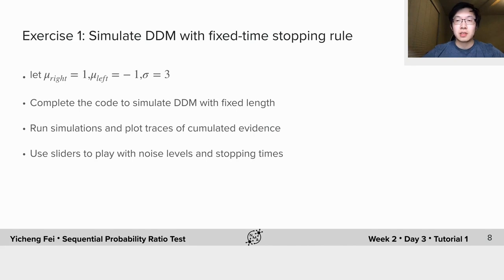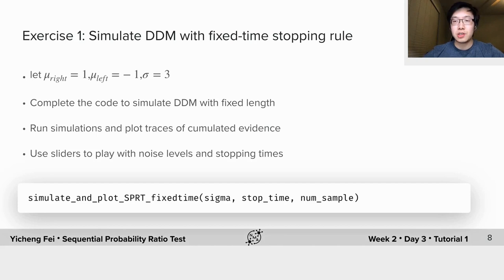You will first need to follow the suggestions in the notebook and write code to simulate a drift diffusion model with fixed length. After that, you can run some simulations from randomly generated data and use our provided code to plot the accumulated evidence as a function of time.